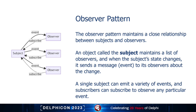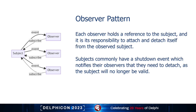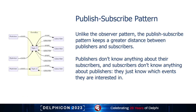The observer pattern maintains a close relationship between subjects and observers. An object called subject maintains a list of observers, and when the subject state changes, it sends a message or event to its observers about the change. A single subject can emit a variety of events and subscribers can subscribe to observe any particular event. Each observer holds a reference to the subject and it is its responsibility to attach and detach itself from the observed subject. Subjects commonly have a shutdown event which notifies observers they need to detach as the subject will no longer be valid.